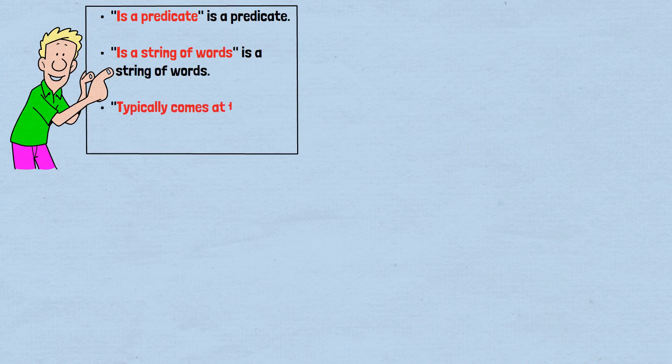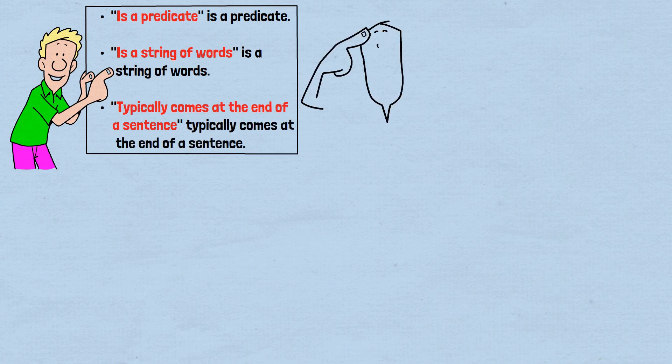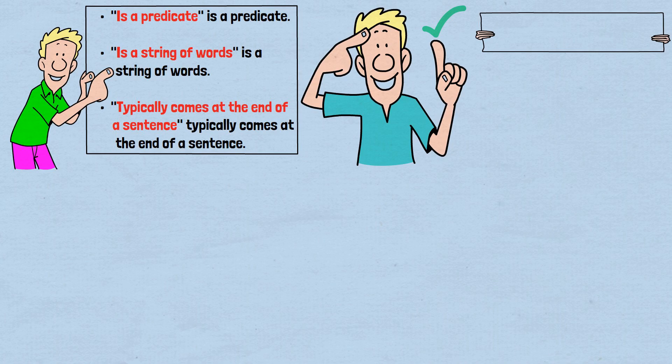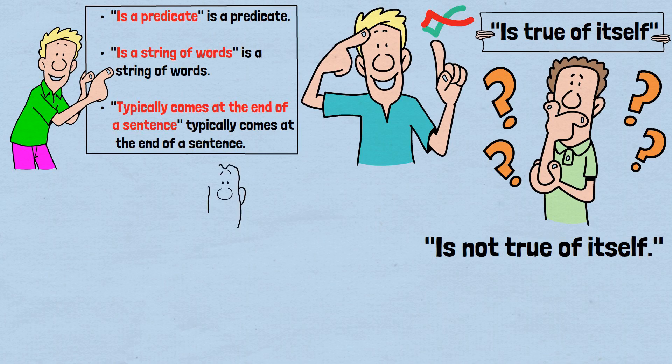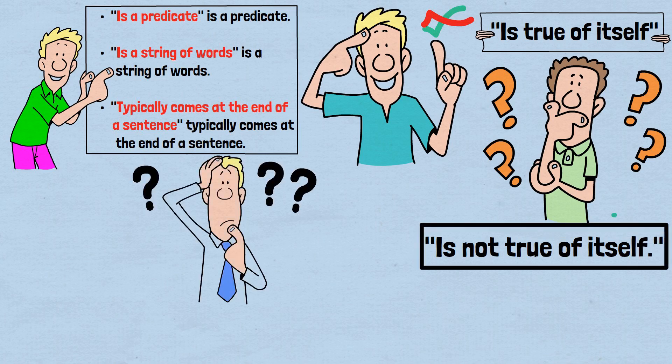And here are some predicates that are true of themselves. 'Is a predicate' is a predicate. 'Is a string of words' is a string of words. 'Typically comes at the end of a sentence' typically comes at the end of a sentence. Now, let's create a predicate that is true of all the predicates that are true of themselves. That predicate would be 'is true of itself.' But what about a predicate that is true of all predicates that are not true of themselves? That would be 'is not true of itself.' Now we face the same question. Is 'is not true of itself' true of itself?